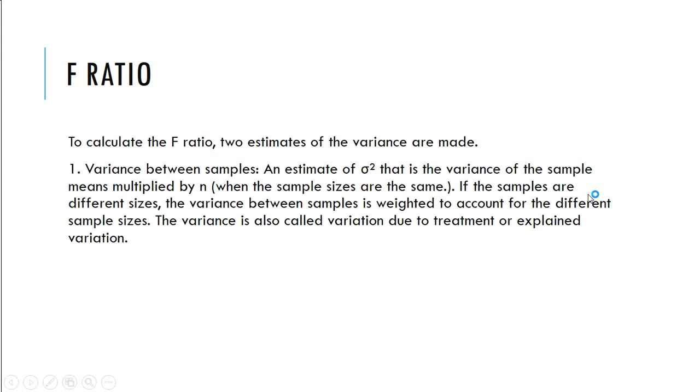So to calculate the F ratio, two estimates of variance are made. So the first one is the variance between samples, an estimate of sigma squared, that is the variance of a sample means multiplied by N.